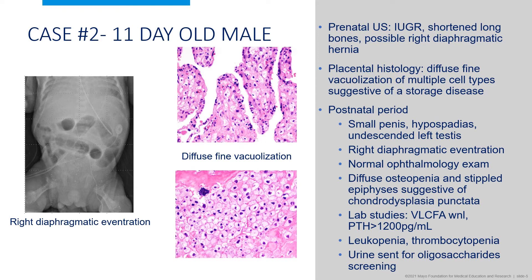About seven months later, a sample from an 11-day-old male arrived in our lab. This infant was born at 34 weeks gestation. During the pregnancy, an ultrasound was concerning for growth restriction, short and long bones, and possible right diaphragmatic hernia.